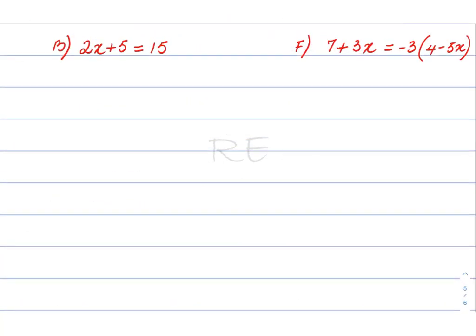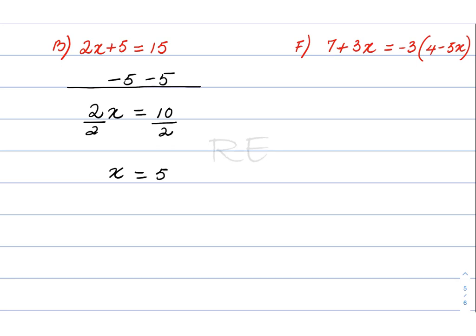For the next question, 2x plus 5 is equal to 15. We subtract 5 from both sides, giving 2x is equal to 10. Using the inverse operation, we divide by 2, and x is equal to 5.